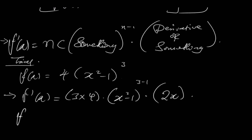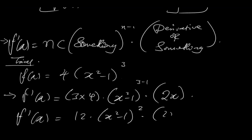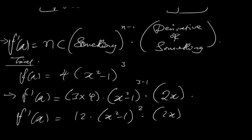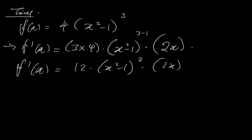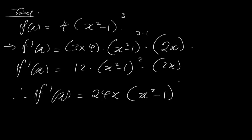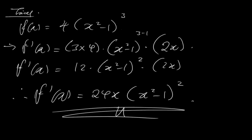Now if you simplify this furthermore, f prime of x would then be 12 times (x squared minus 1) to the power of 2, times 2x. This can be simplified further, and therefore f prime of x is equal to 12 times 2x, that gives you 24x times (x squared minus 1) to the power of 2. And this is the final answer.